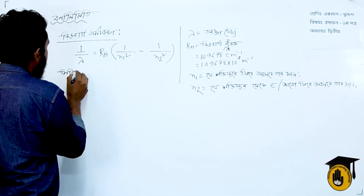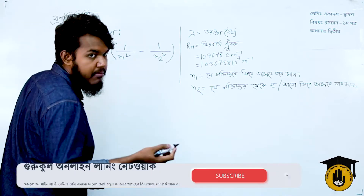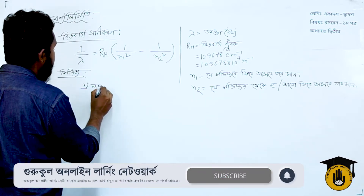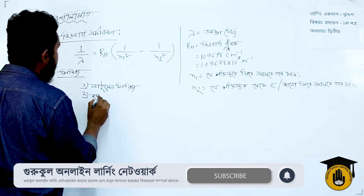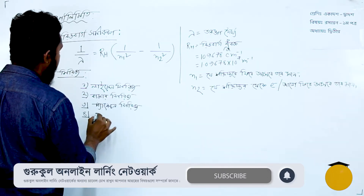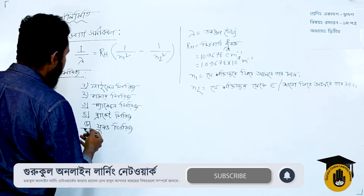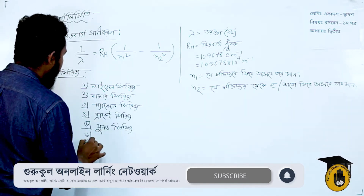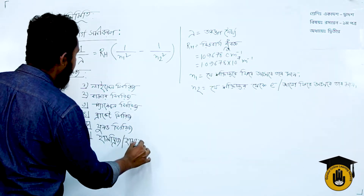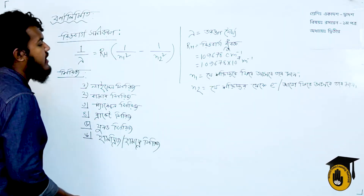The names of the hydrogen spectral series are: 1. Lyman series, 2. Balmer series, 3. Paschen series, 4. Brackett series, 5. Pfund series, 6. Humphreys series.